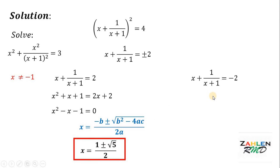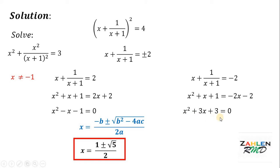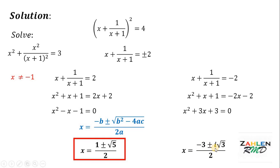For the second case, multiply the whole equation by x plus 1. We get x squared plus x plus 1 equals negative 2x minus 2. Equating to 0 gives x squared plus 3x plus 3 equals 0. Again using the quadratic formula, where a equals 1, b equals 3, and c equals 3. Substituting gives x equals negative 3 plus or minus i times the square root of 3, all over 2.